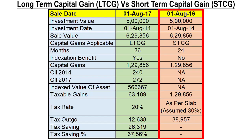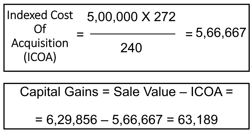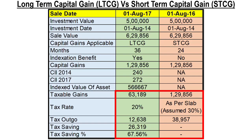In the case of LTCG, indexation is applicable. So the first step is to check the CII for both the years, which is 240 for 2014 and 272 for 2017. Next, we calculate the ICOA, which is Rs. 5,00,000 multiplied by 272 divided by 240, which gives us Rs. 5,66,667. Accordingly, the capital gains is Rs. 6,29,856 minus Rs. 5,66,667, which gives us Rs. 63,189. And 20% income tax on this amount comes to Rs. 12,638. This means that there is a tax saving of Rs. 38,957 minus Rs. 12,638.